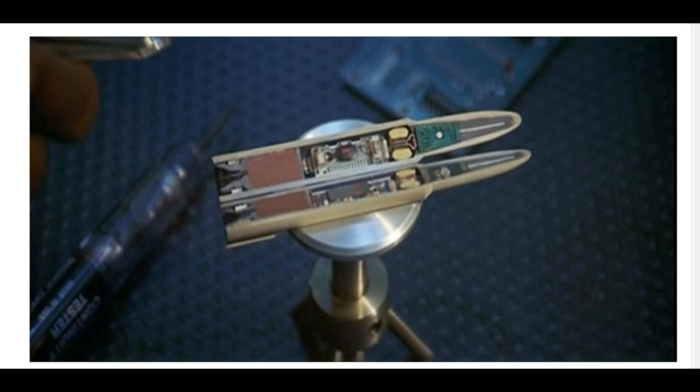After a series of successful tests conducted this year, the Exacto program is finally releasing new footage of their self-guiding bullets in action. These 0.50 caliber projectiles can change direction mid-flight and function much like the laser-guided bombs first developed by the United States during the Vietnam War.